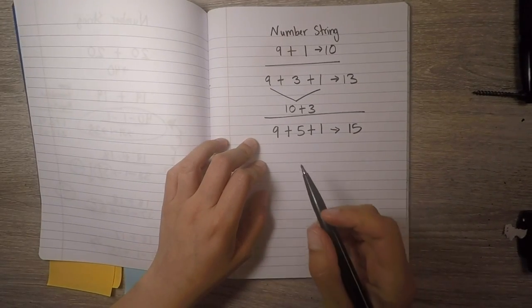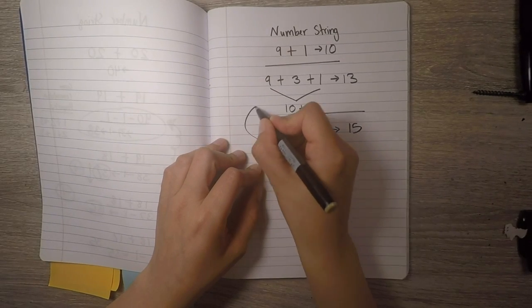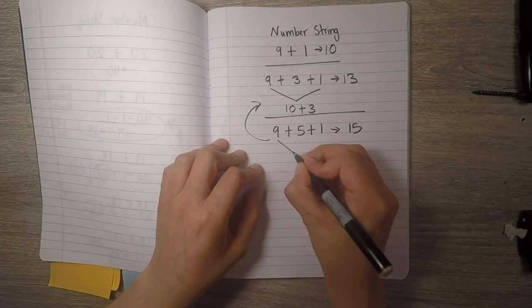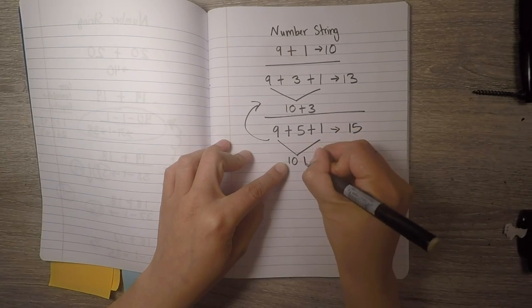Awesome job, mathematicians. Now, for this one, you probably did the same thing that you did in the previous number sentence where you took the nine and the one, made your friendly number ten, added five more, and got to fifteen.